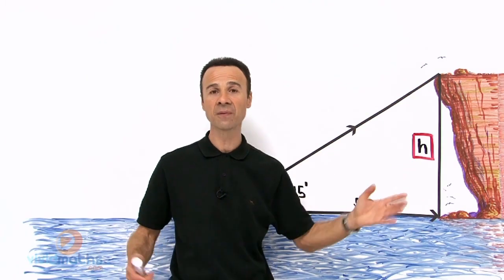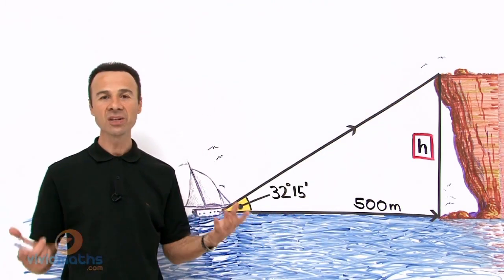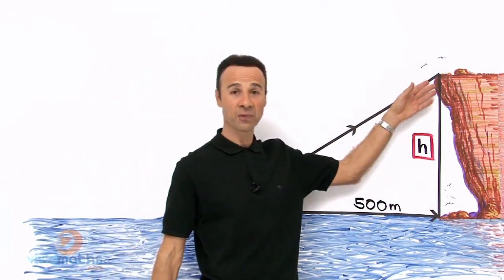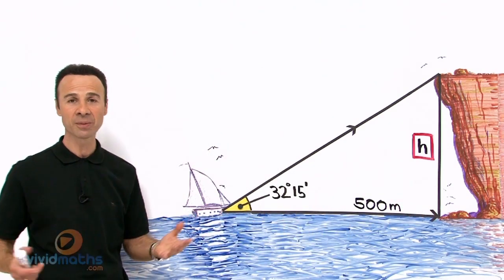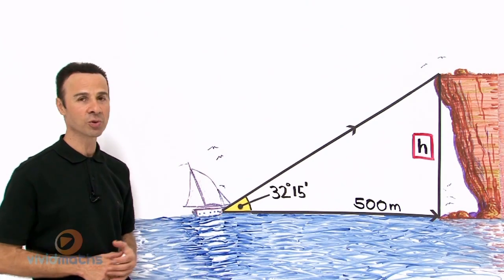You can measure easily without having to actually physically measure it. All you need to know is how far out you are and the angle of elevation. That is all you need. Isn't that terrific? Well, let us do that now. Let us work out the height h of this cliff.